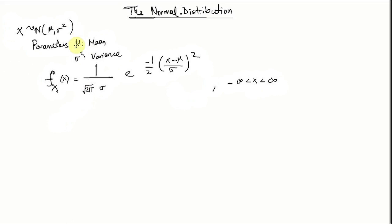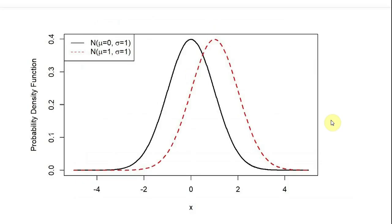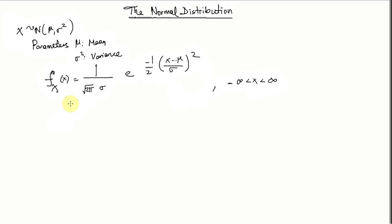The parameter mu is sometimes called the location parameter. This is because a change in this location parameter shifts the PDF along the horizontal axis. For example, on this plot, we have two probability density functions of a normal distribution overlaid — one with parameter mu equals 0 and sigma equals 1, another with mu equals 1 shown with red dotted lines and sigma squared equals 1. A change in mu, which is the only difference between these two plots, results in a shift along the horizontal axis.